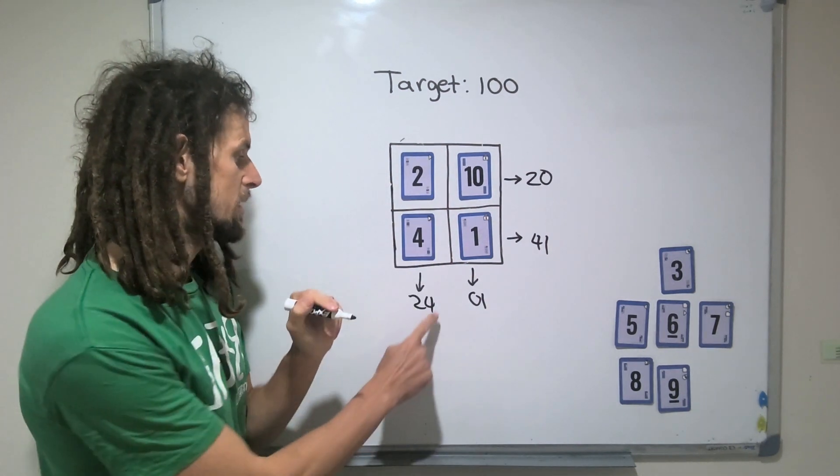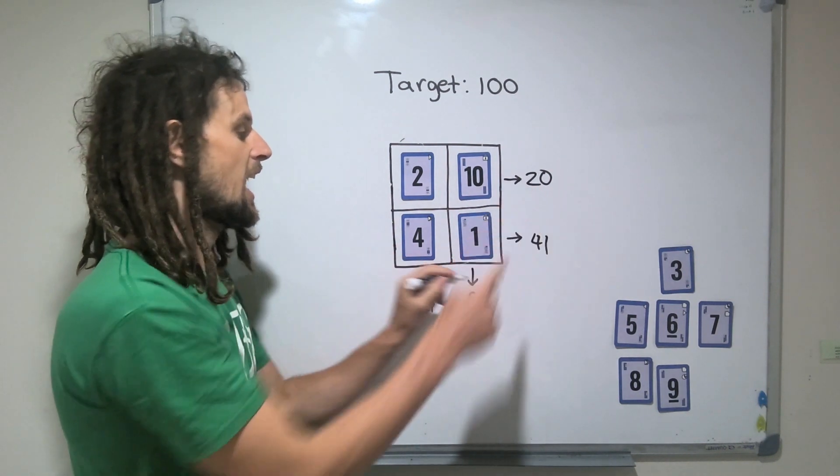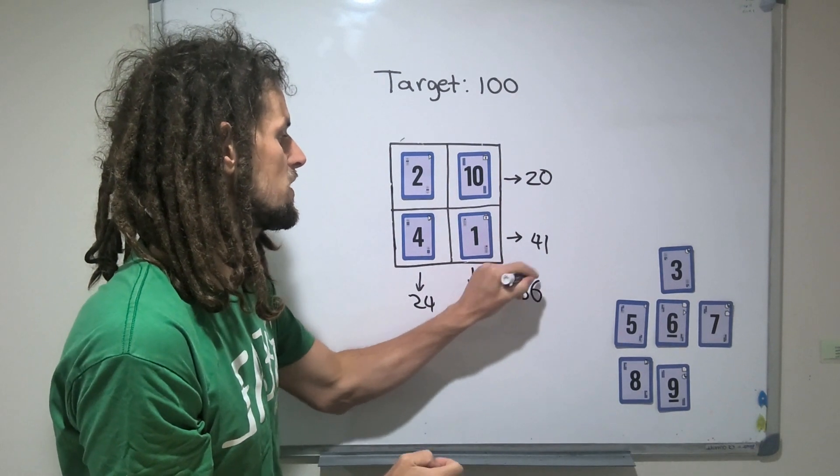Here we'll add them all up. There's 25 there, plus 40 is 65, plus 1 is 66, 86. So we've gotten to 86 here.